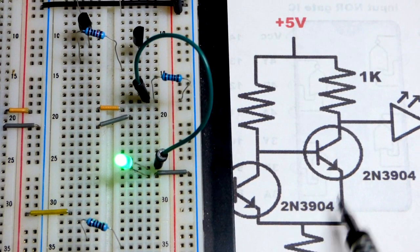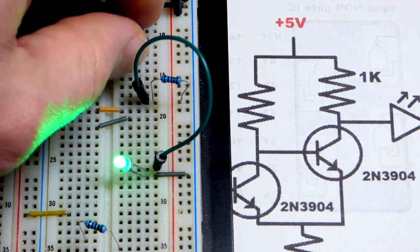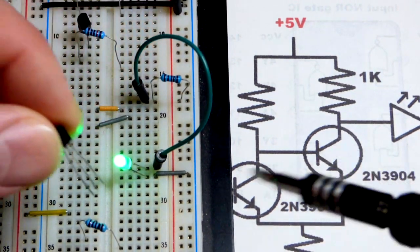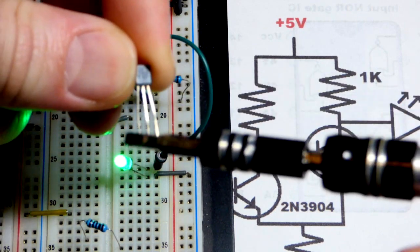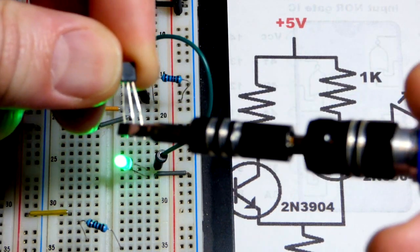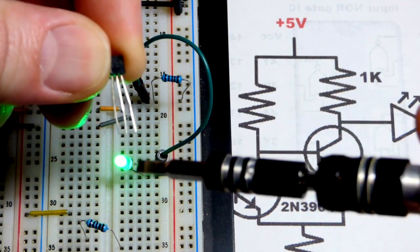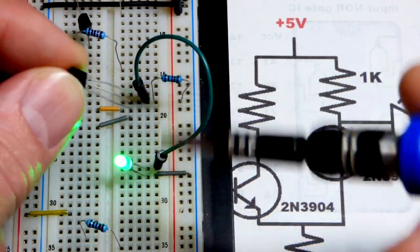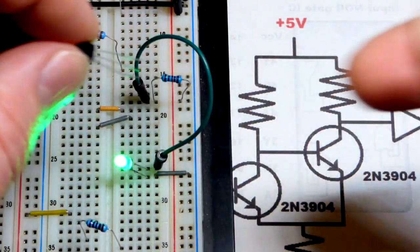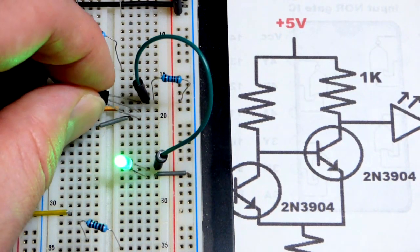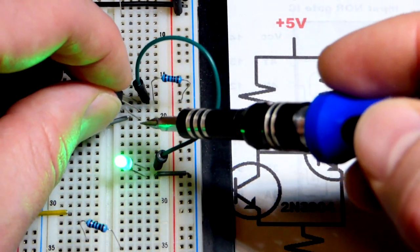Now the transistor we're going to use is the 2N3904, we're going to use a couple of them but this first one here. This is the flat side facing us, that's one two three: emitter base collector.